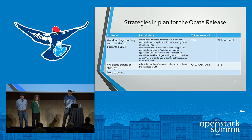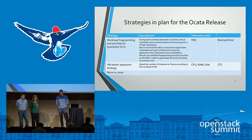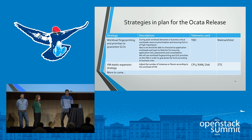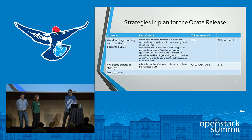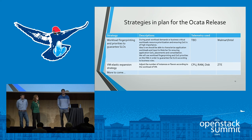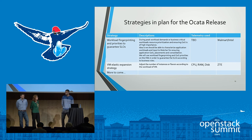These are the strategies we plan to add in the Okata release. First, Walmart and Intel want to work on using fingerprinting to guarantee service level objectives. Some workloads in the infrastructure are critical for the business while others are less important — for example, continuous integration jobs that are not critical and can be killed to guarantee service for critical systems. Another strategy is elastic extension of VM flavors: sometimes the flavor chosen initially is not well-suited, and we want to be able to add vCPUs or RAM to guarantee service.